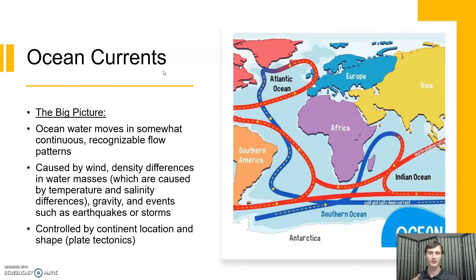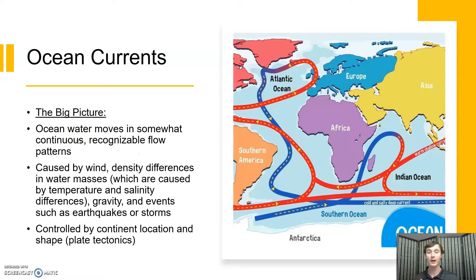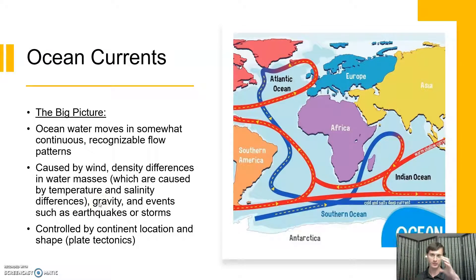This is going to be our ocean currents. The water in the oceans is not flowing around randomly — it's not something that changes every day like the weather would be. Instead, we have these continuous, recognizable patterns of flow. What drives these patterns? That's going to be wind, density differences, and water masses, which reflect temperature and salinity differences — the so-called thermohaline forces — which are then forced by gravity to differentiate different water bodies from one another, leading to the patterns that we will see.